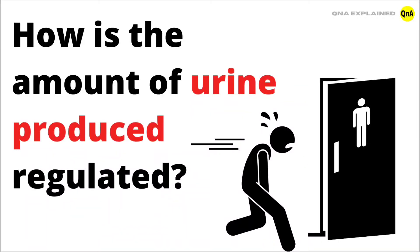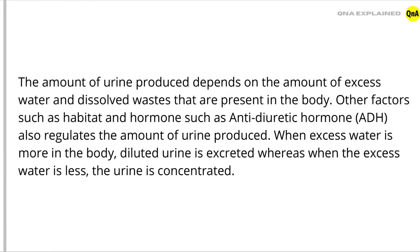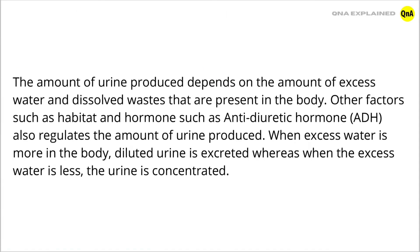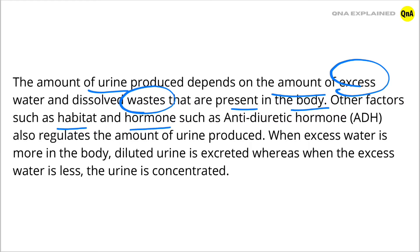How is the amount of urine produced regulated? The amount of urine produced depends on the amount of excess water and dissolved wastes that are present in the body. Other factors such as habitat and hormones such as antidiuretic hormone (ADH) also regulate the amount of urine produced.